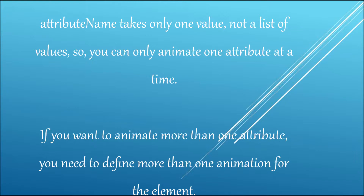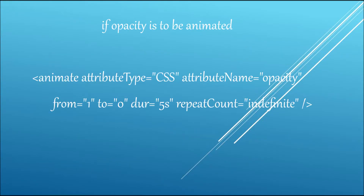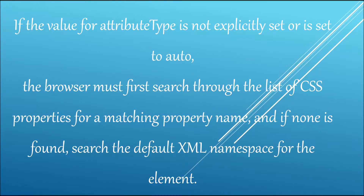Now let me discuss 'attributeName' in a little more depth. attributeName takes only one value, not a list of values, so you can only animate one attribute at a time. If you want to animate more than one attribute you need to define more than one animation element. For example, if I want opacity to be animated, my attributeName will be 'opacity', from 1 to 0, duration 5 seconds, repeatCount indefinite.